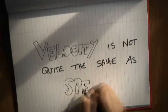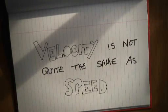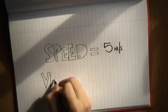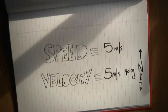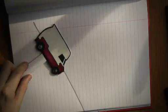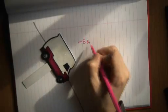But velocity, isn't that just another way of saying speed? Well, not quite. The concept of velocity includes what direction you're travelling in. So you could have a speed of 5 metres per second, but you'd have a velocity of 5 metres per second going north.